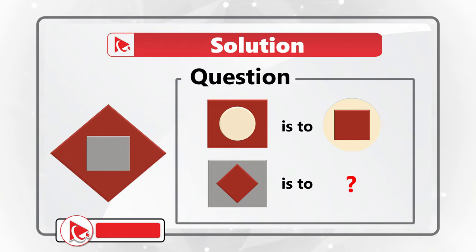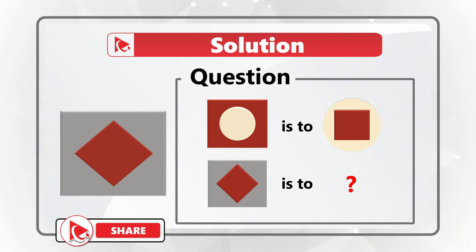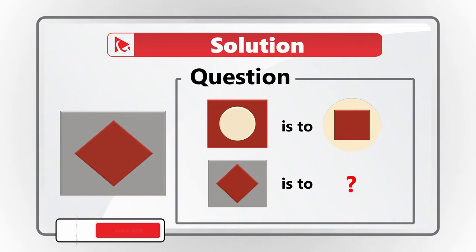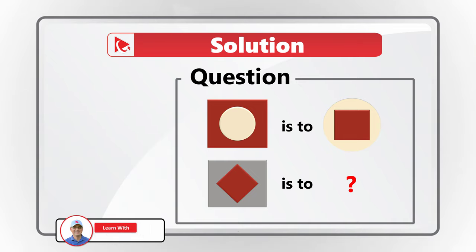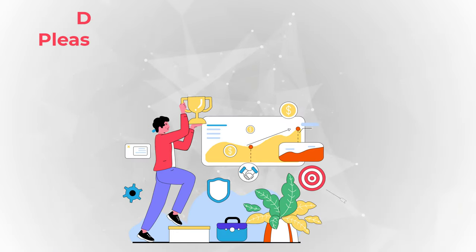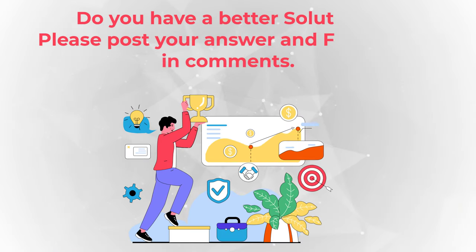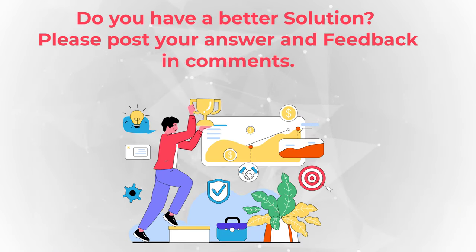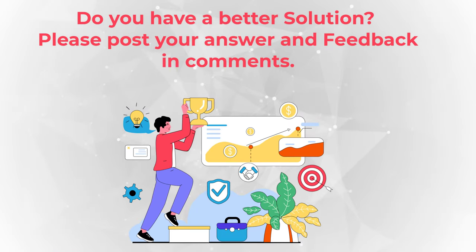To find the final answer, you need to look for the gray rectangle which decreases in size and becomes the inner object in the foreground, where the red diamond becomes the larger object in the background. Hopefully you've nailed this question and now know how to answer similar problems on the test.